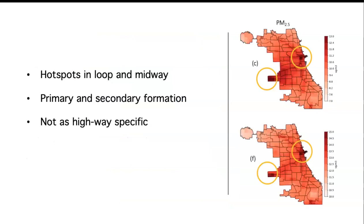We can also look at something like particulate matter, where we're seeing hotspots in the loop and in Midway, but not so much in other places — it's a more gradual gradient, though certainly elevated over the highway. That's because particulate matter is not only emitted directly like nitrogen dioxide, but it also forms through secondary reactions, similar to how ozone is formed in the environment.